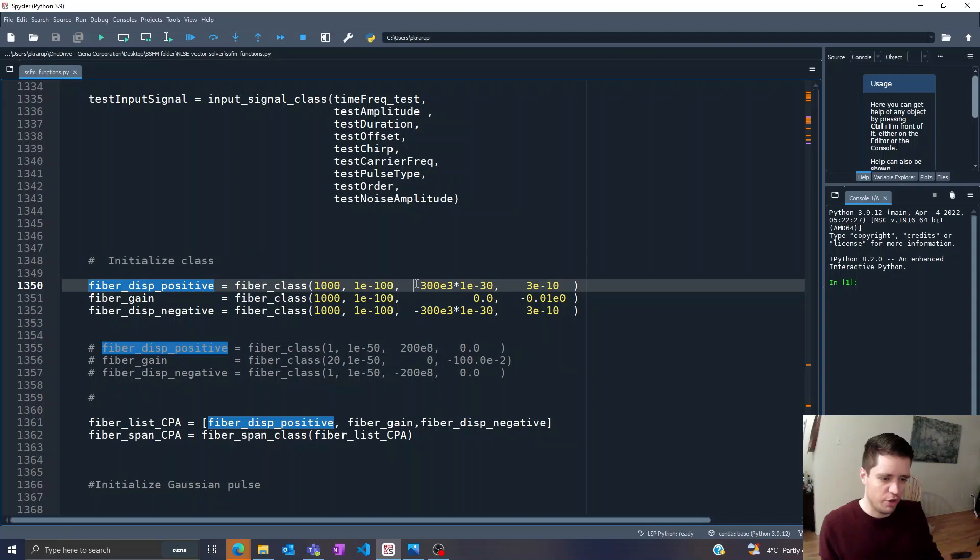The first one has a positive dispersion value as you can see right here. This means that we have what's called normal dispersion, where red light moves faster than blue light. So that'll cause the pulse to generally spread out in the time domain and obtain a negative chirp in the front and a positive chirp in the back.